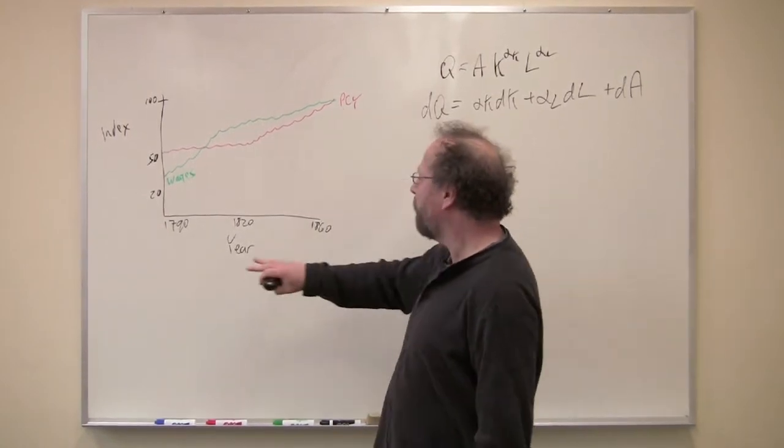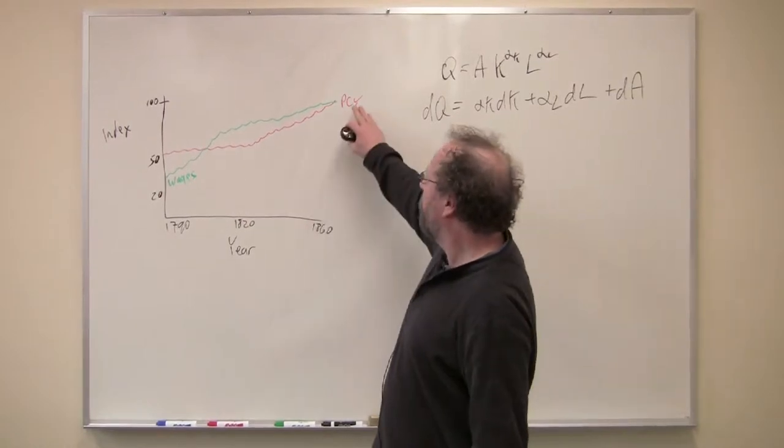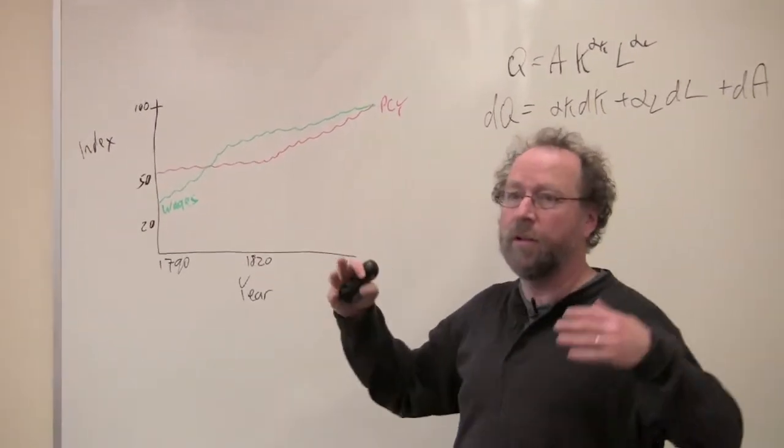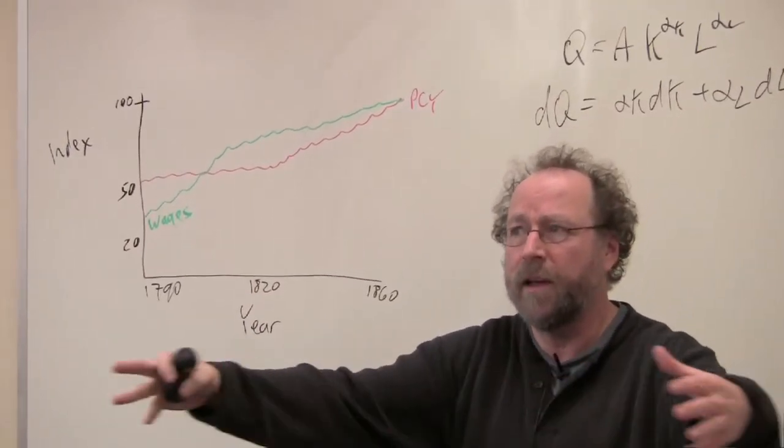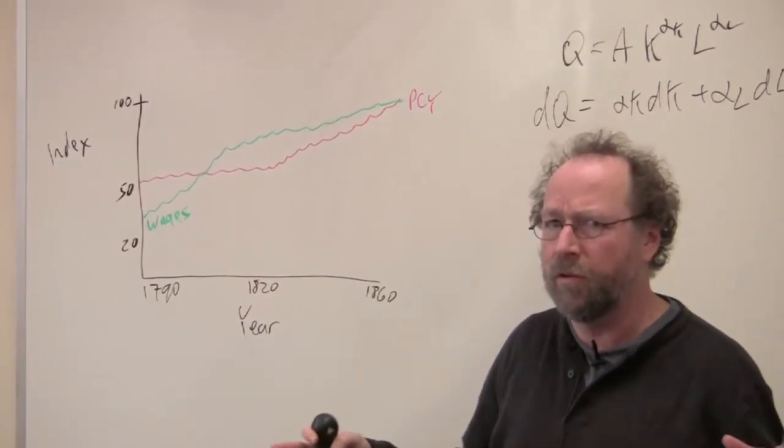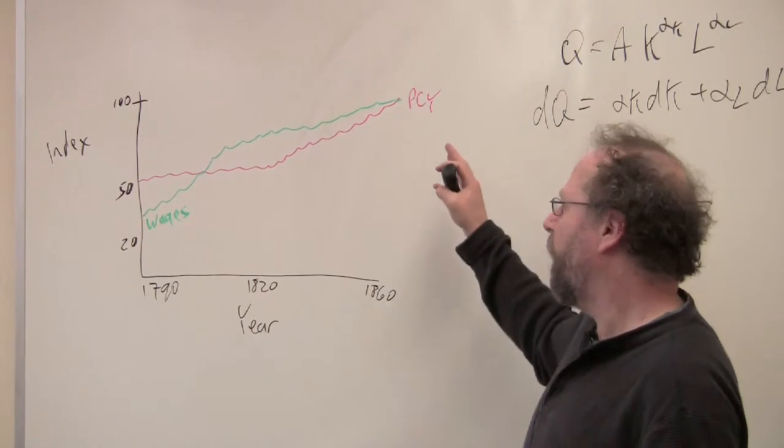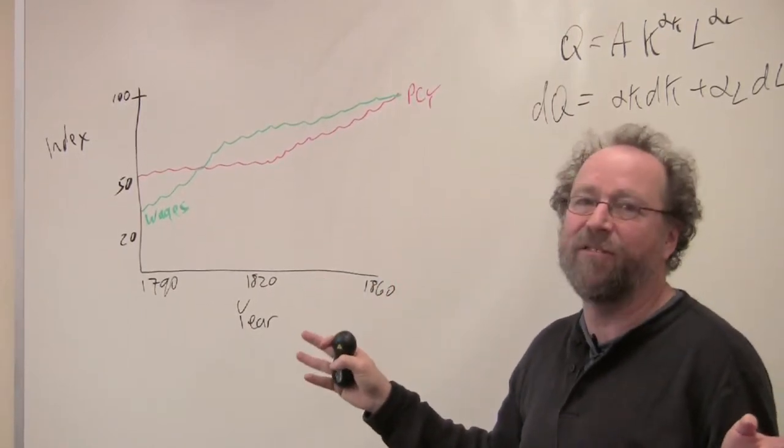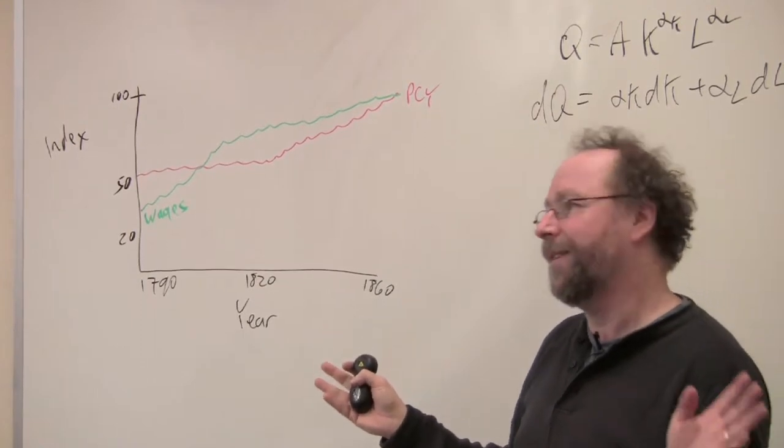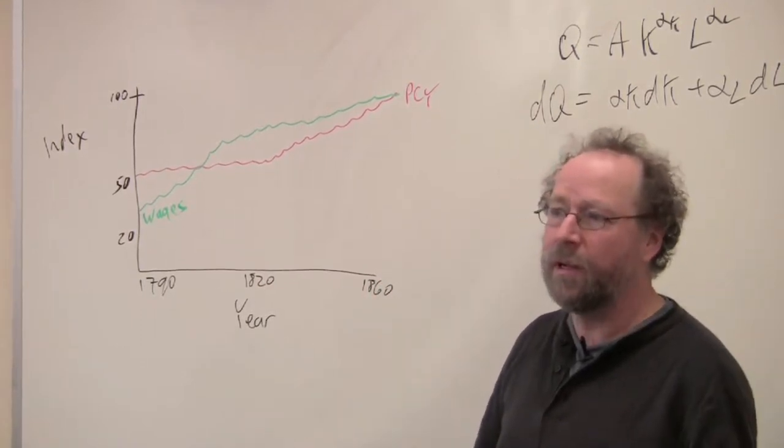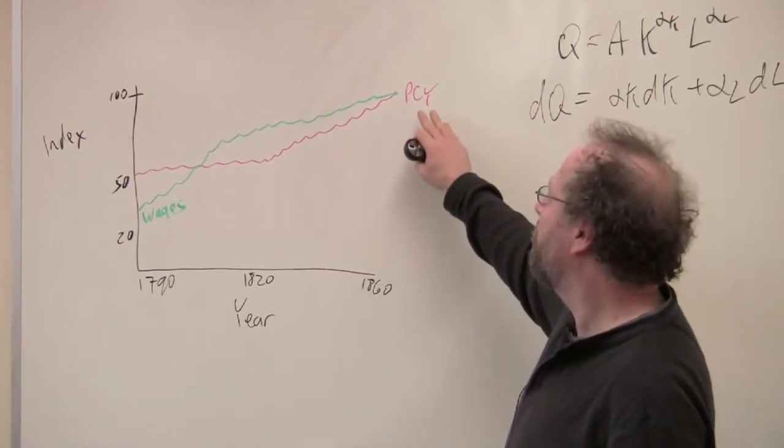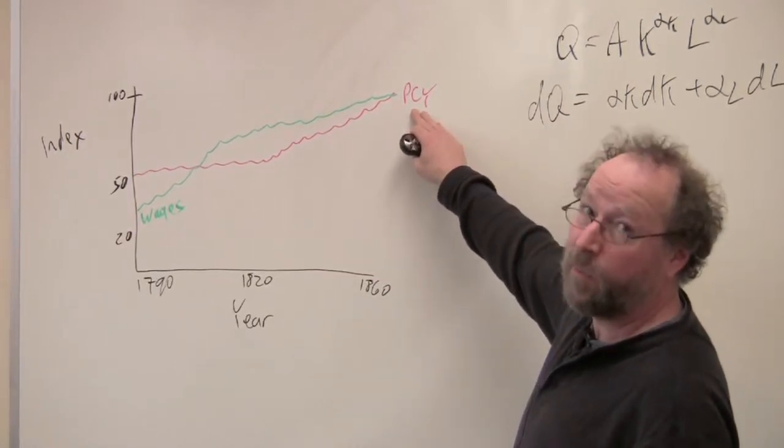Over here we've got a little chart showing an index of economic growth per capita. That is, the gross domestic product, the sum of everything that's produced and sold, divided by the population. It's a rough measure of average well-being. It doesn't talk about distribution, it leaves out home production and a lot of other stuff, but this is the standard measure used, PCY, per capita income.